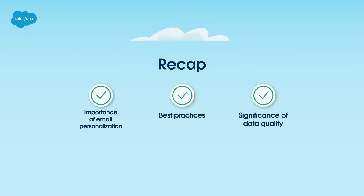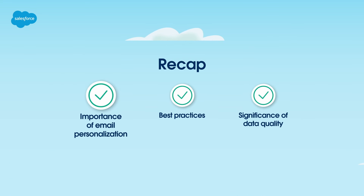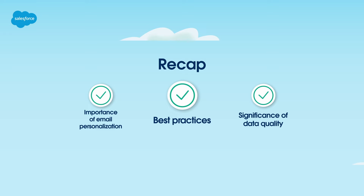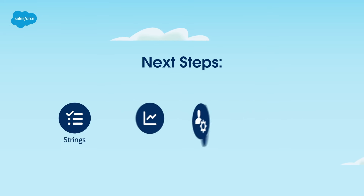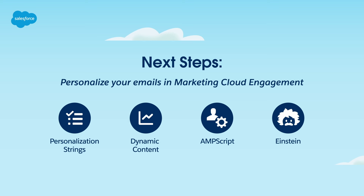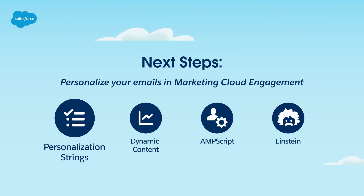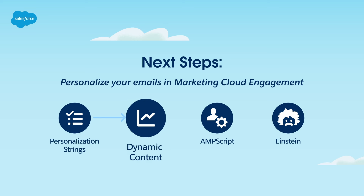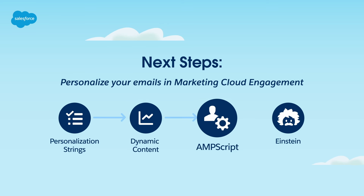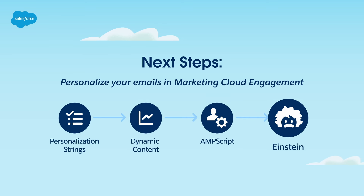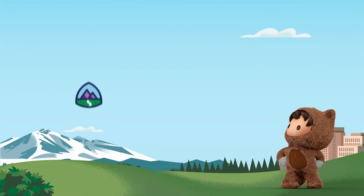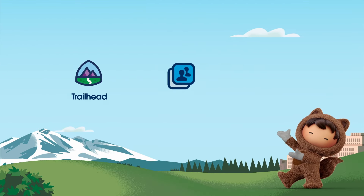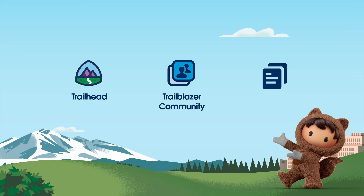To recap, we've learned the importance of email personalization, best practices, and the significance of data quality. Next, learn how to personalize your emails in Marketing Cloud Engagement using four key tools: personalization strings, dynamic content, AMPscript, and a suite of Einstein AI features. Learn all about these tools in our webinar on email personalization tools, or through Trailhead and our help site.